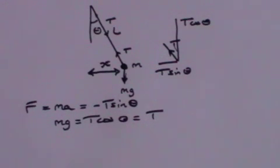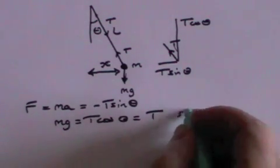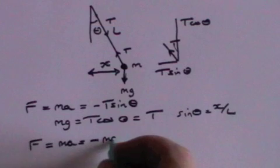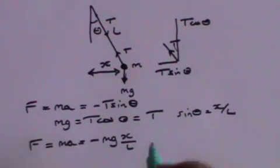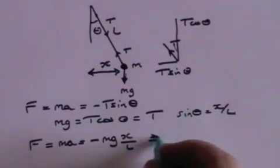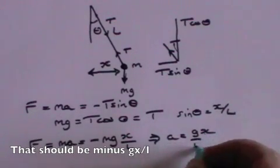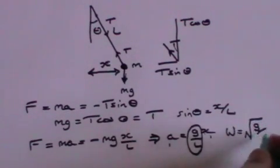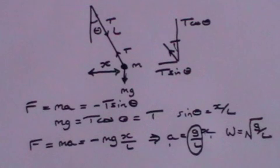Strictly speaking, a pendulum will only oscillate with simple harmonic motion if it swings through only a small angle. Sine theta is x divided by l. Using Newton's second law again, f equals ma, which equals minus mg times x over l. This gives a equals minus gx over l. The acceleration is proportional to the displacement — that is simple harmonic motion. Omega squared is g over l, and omega is the square root of g over l. From this, you can determine the frequency of the pendulum's oscillations.